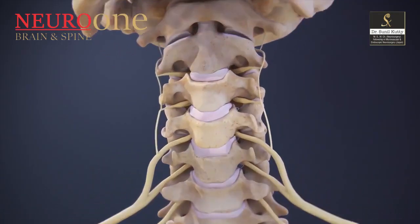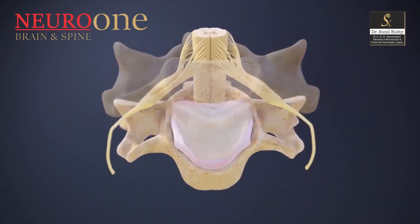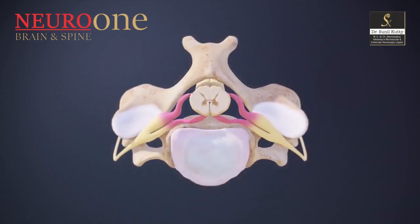The approach itself is rather easy — we have a highway that goes right to the front of the spine. We dissect out a few muscles, take care of the carotid artery and the internal jugular vein, and we land directly on the anterior cervical spine. We then choose the disc that is causing the problem and deal with it.